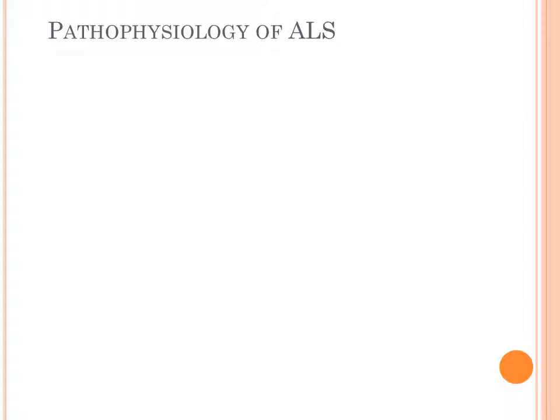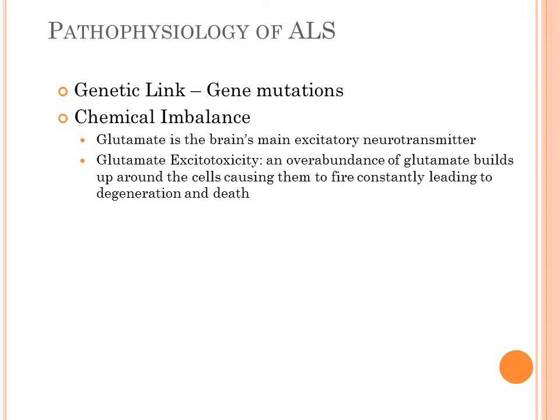Most ALS victims are between the ages of 40 to 70; it would be rare to see it in someone in their 20s or 30s. The pathophysiology of ALS does seem to have some genetic component, some gene mutation component. What they have found is a definite chemical imbalance — specifically involving glutamate, the brain's main excitatory neurotransmitter.